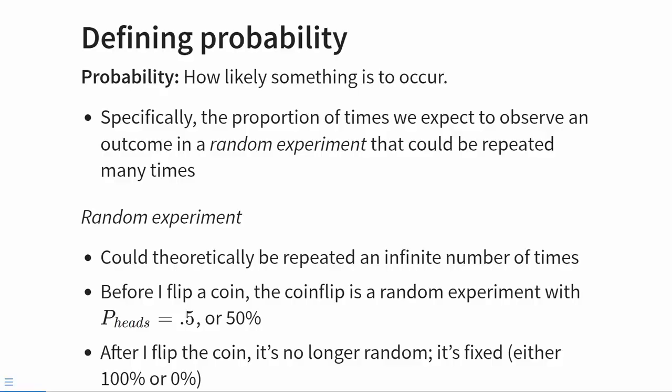The very first thing we have to do is define the concept of probability, and surprisingly how you define probability matters a whole lot. Within the context of this course, whenever we discuss probability we are talking about the long-run probability, which applies to any random experiment that you could theoretically repeat very many times — maybe an infinite number of times — and probability in this context is the proportion of those infinite times in which you would expect to see a particular outcome.